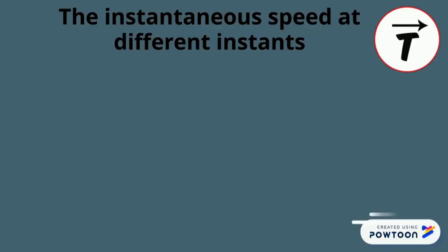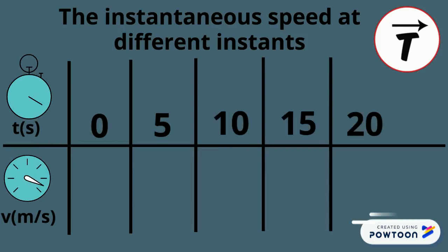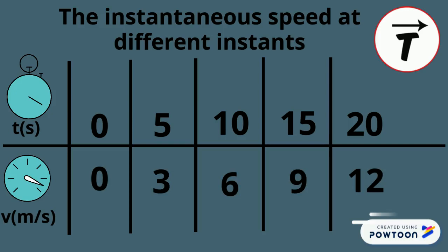In this table, we record the instantaneous speed of the scooter at different instants. Every five seconds, the speed is increasing by three meters per second. So we can conclude that at instant t equals 20 seconds, the speed of the scooter has reached 12 meters per second.